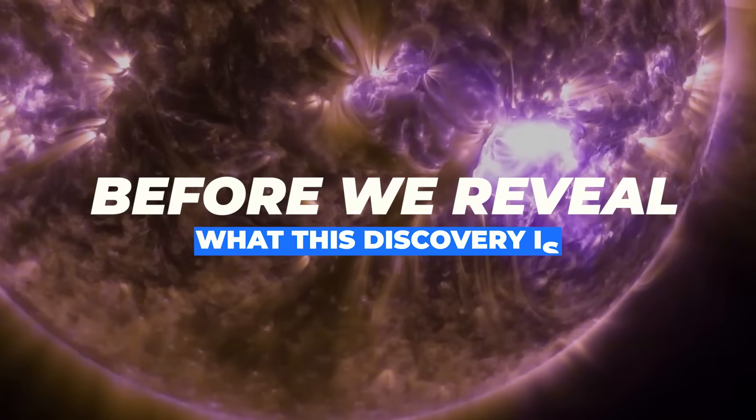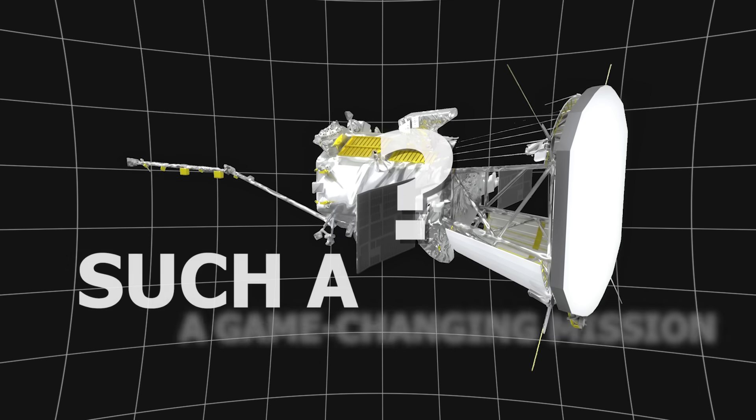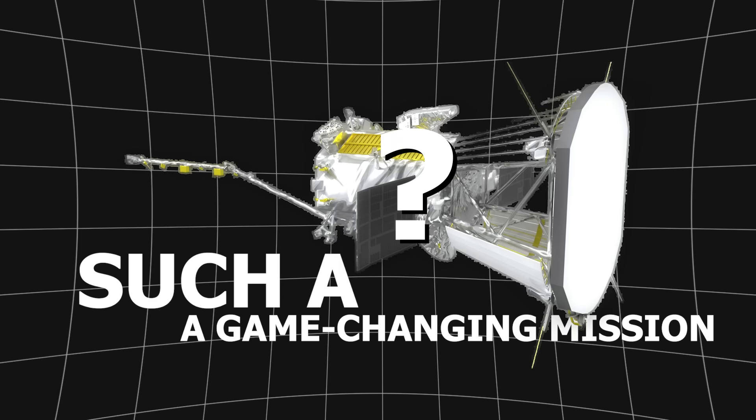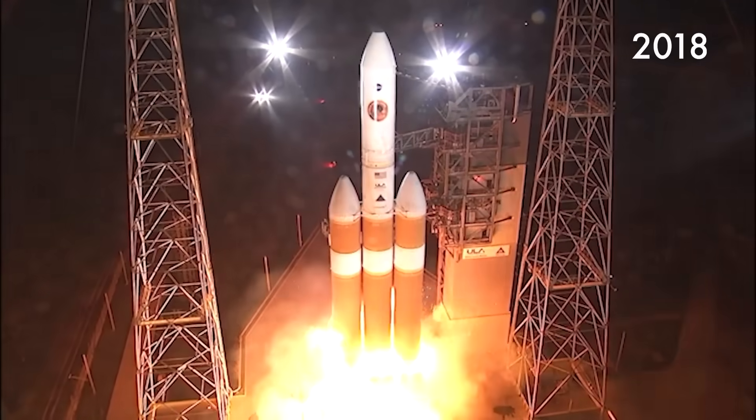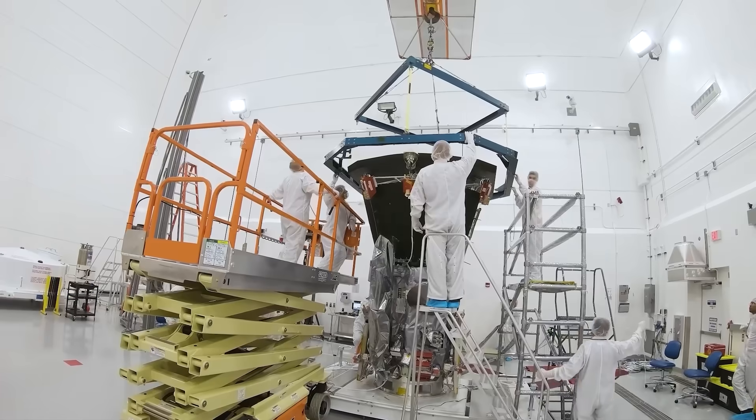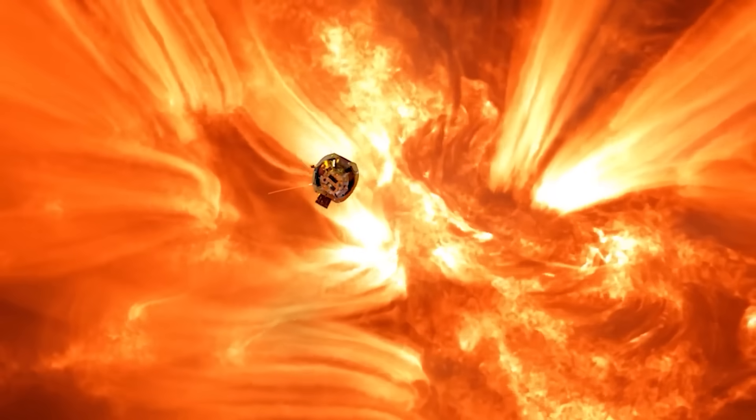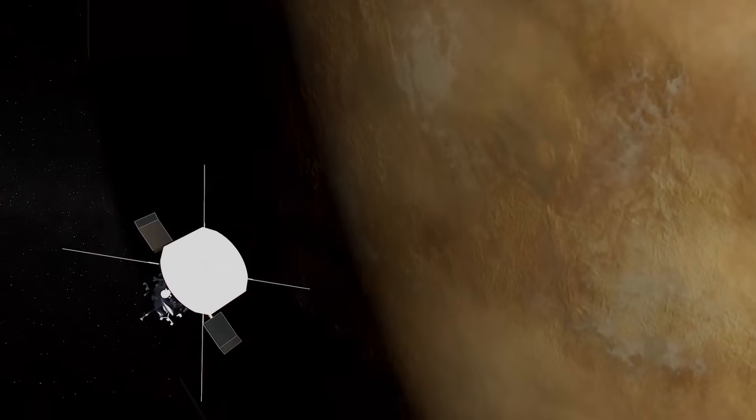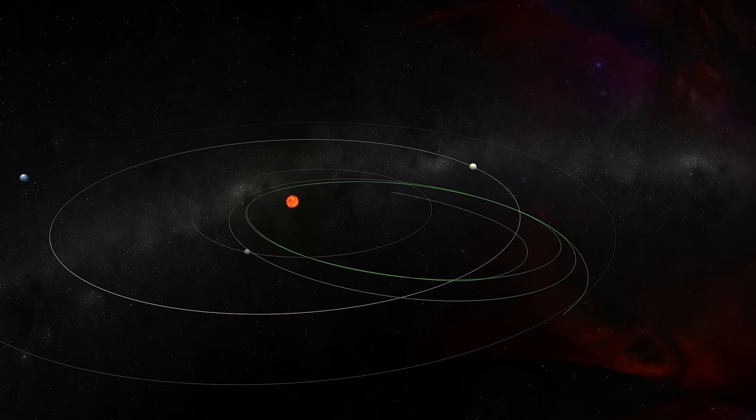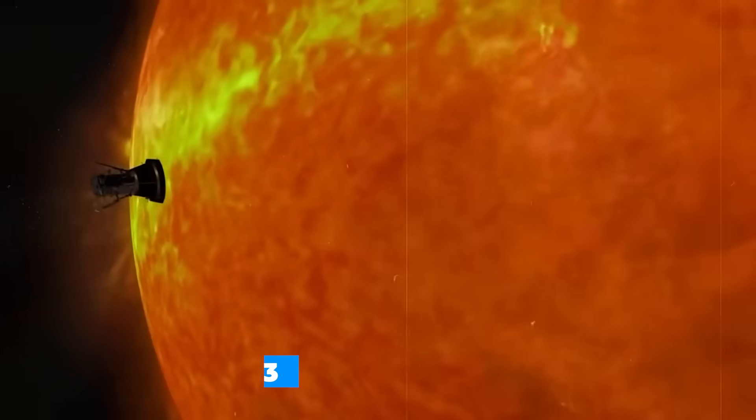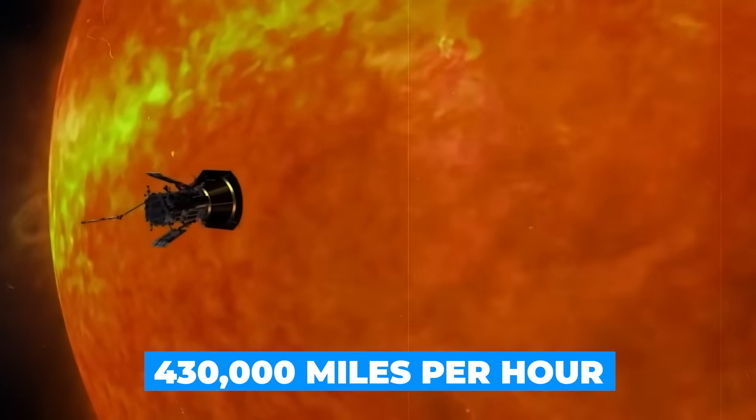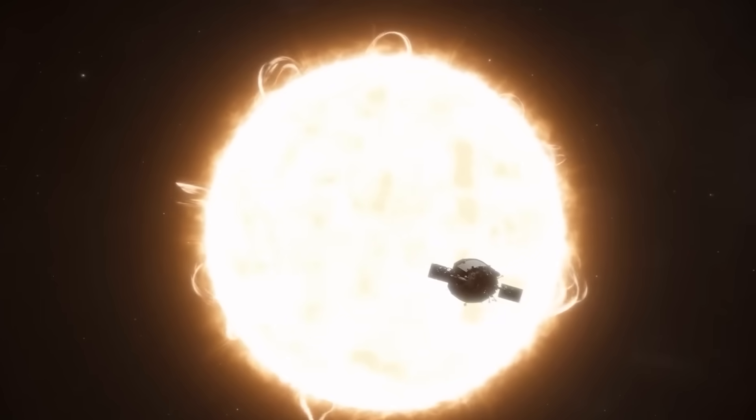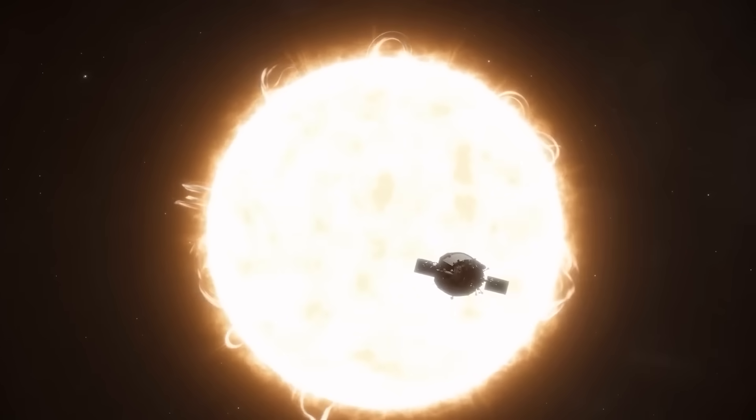But before we reveal what this discovery is, let's talk about why the Parker Solar Probe is such a game-changing mission. Launched in 2018, the Parker Solar Probe is one of NASA's most ambitious missions. Designed to fly closer to the sun than any spacecraft before it, it's pushing the boundaries of what we can observe in our own solar system. Moving at an astonishing 430,000 miles per hour, it holds the record as the fastest human-made object in history.